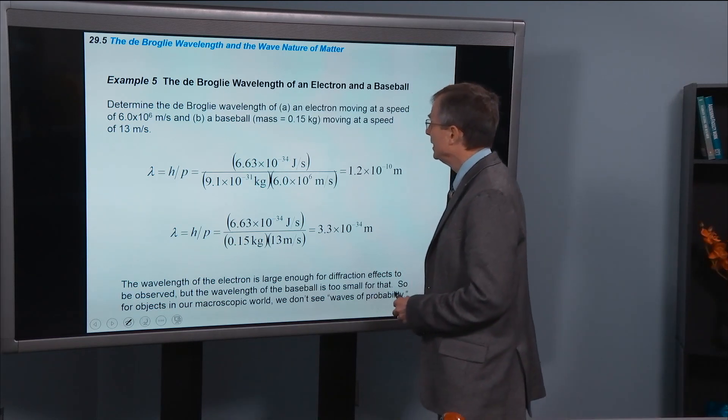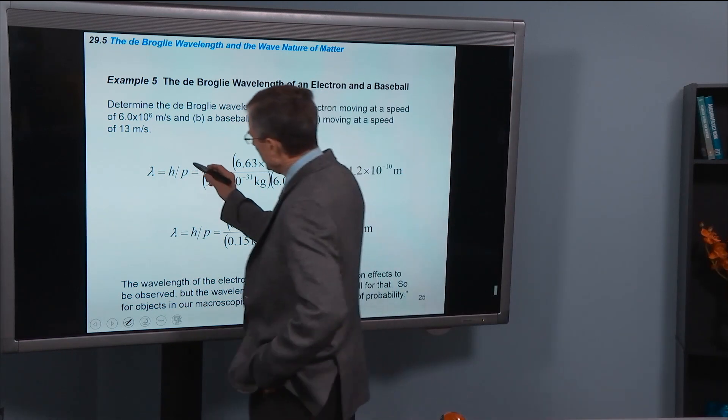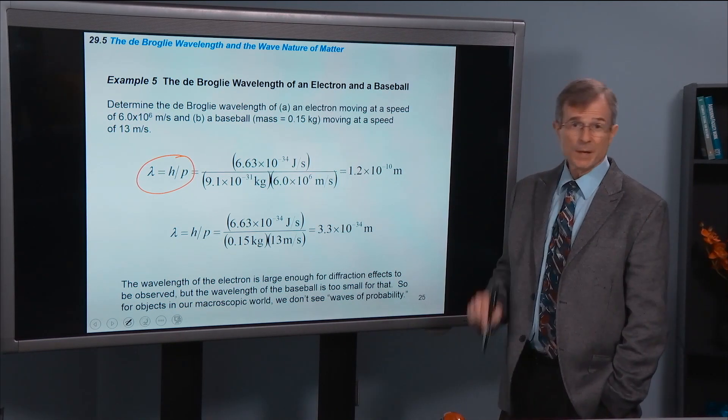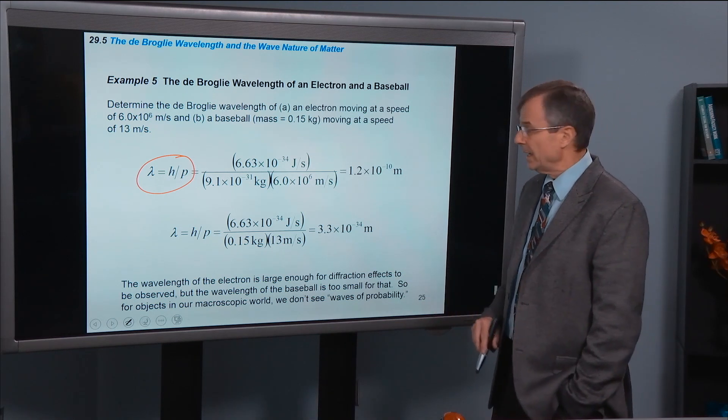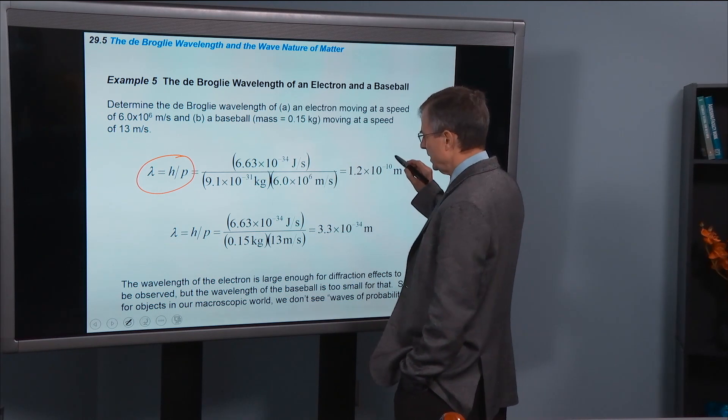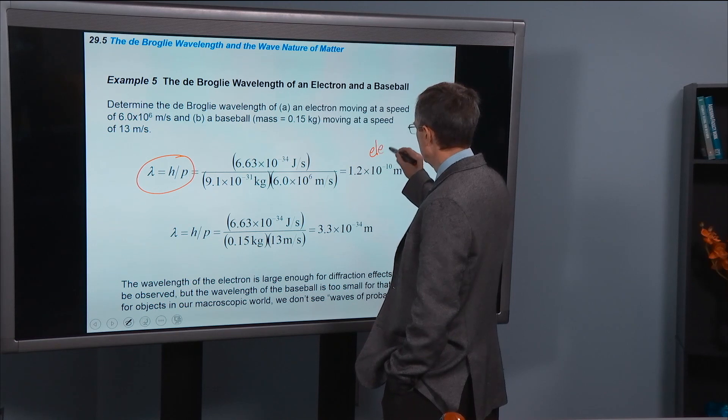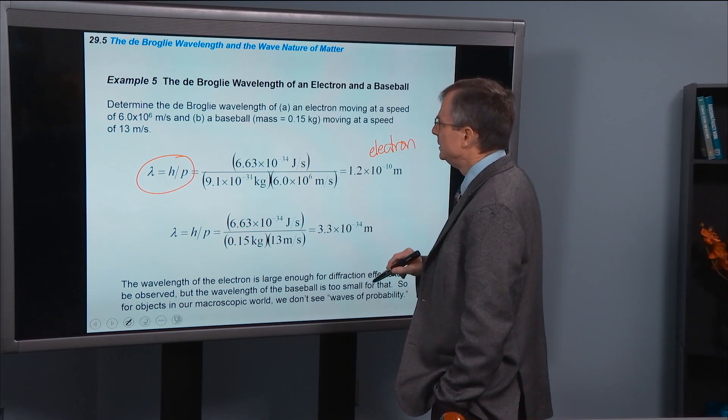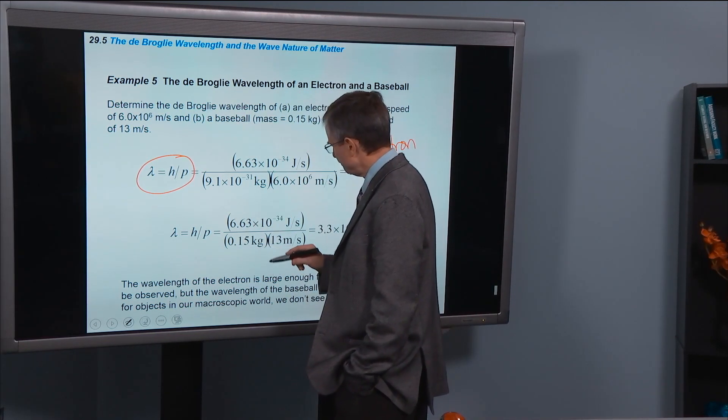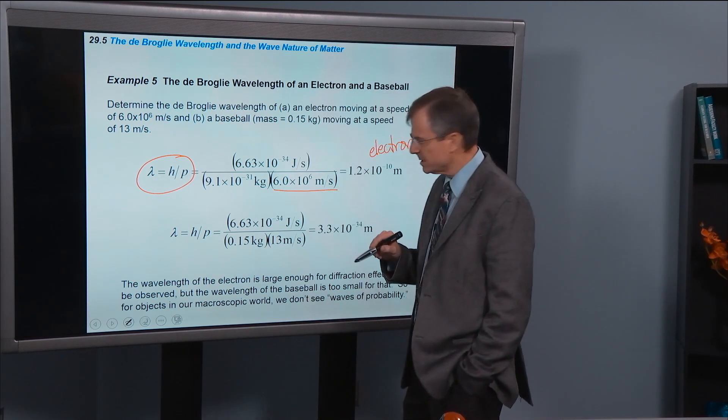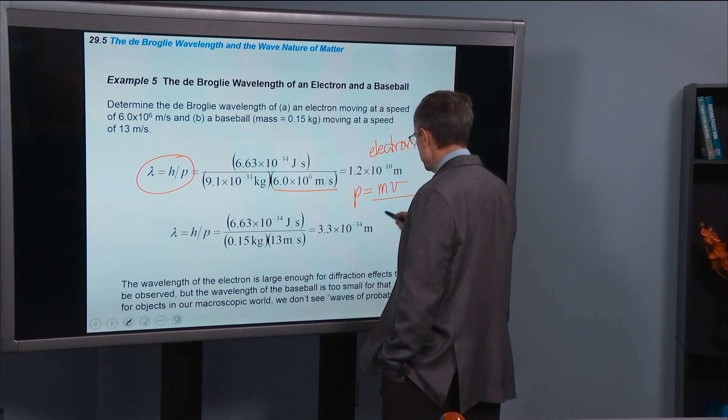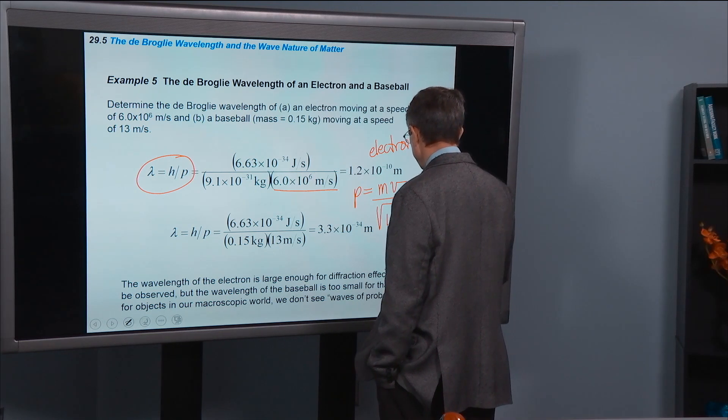Example five, the de Broglie wavelength of an electron and a baseball. So here's that same de Broglie wavelength. And we're interested in knowing what that is for an electron traveling at a high speed and for baseball. Well, here's for the electron. Electron moving 6 times 10 to the 6 meters per second. So, actually, at 6 times 10 to the 6 meters per second, P equals MV because this relativistic correction is small.